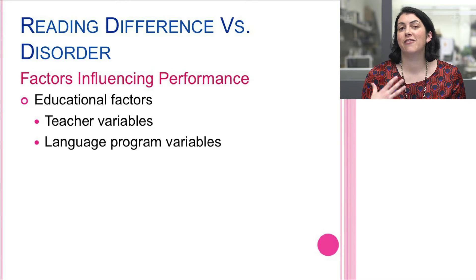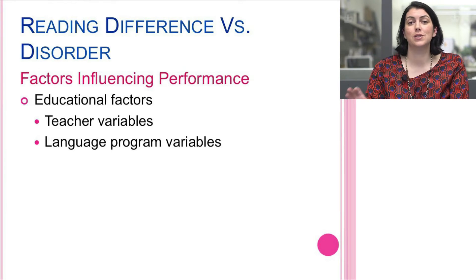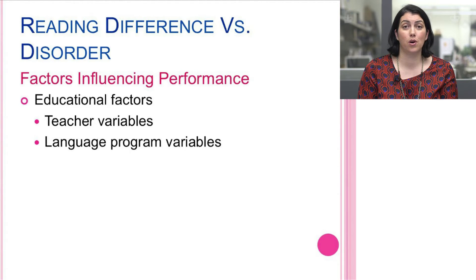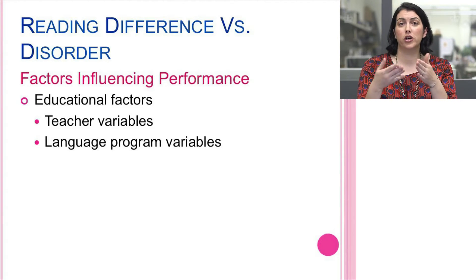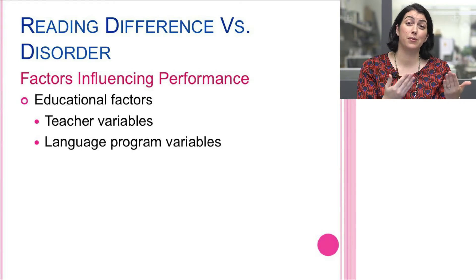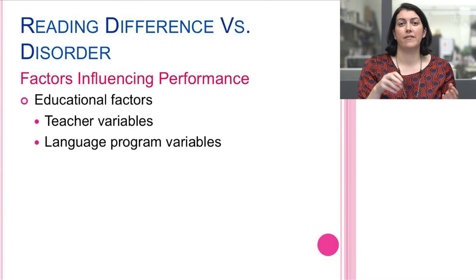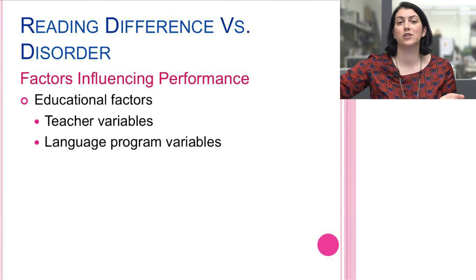There are many factors to think about, and we need to own that we are often one of the variables. When looking across students in different classrooms, it's important to consider teacher variables and access to different language programs. A pattern was noticed one year when various first graders were being referred to a student study team — the common thread turned out to be a shared kindergarten teacher, not an issue with each student's reading ability.